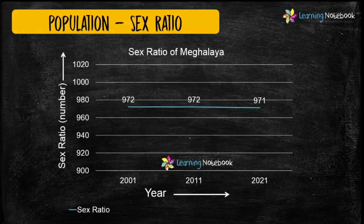Next, you can use a line chart to show the sex ratio of the population of Meghalaya, as shown here.